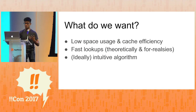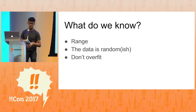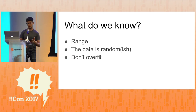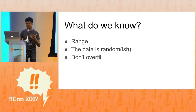How can we use those things? What do we know about the data that we have? We know its range. We know it's kind of random-ish. And beyond that, we don't want to be too clever — we don't want to try to fit to certain properties of the data that it might have today but not tomorrow or the day after. You don't want to be over-smart.